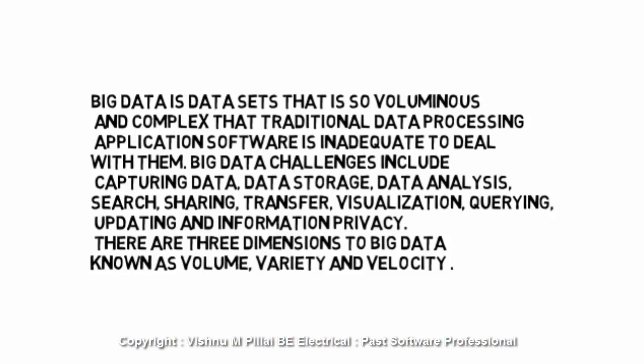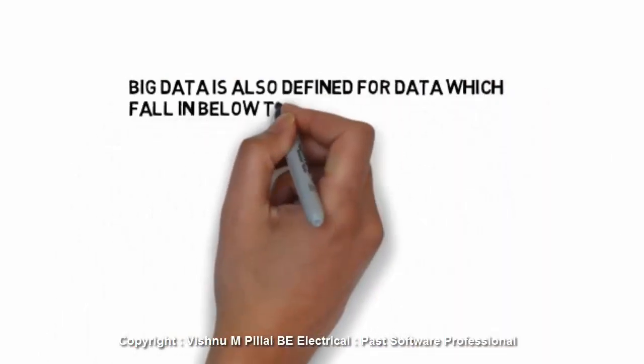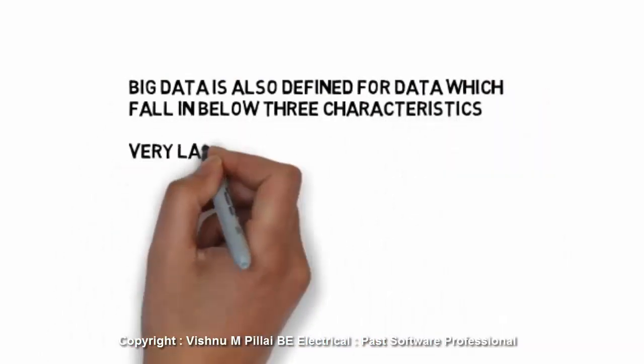There are three dimensions to big data, known as volume, variety, and velocity. When you use the term big data, it is related to data which is very voluminous, very complex, and has a high velocity, meaning the rate of creation of the data is very high. And the variety of data—multi-variety data is created, so not only one type of data but multiple types of data are created.